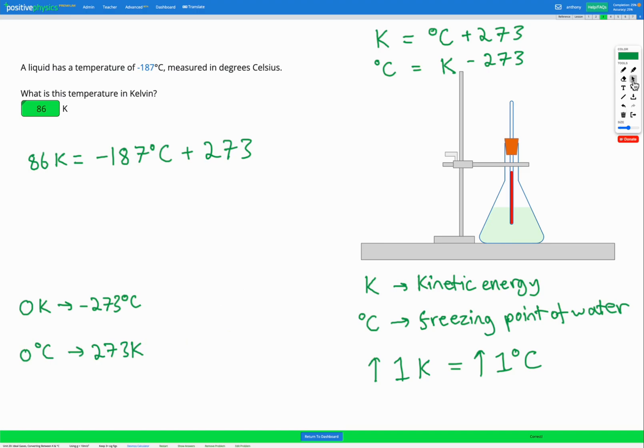So we can see that the lowest possible temperature, the temperature where particles don't have any kinetic energy, they're not moving, would be zero degrees Kelvin, which is the same as negative 273 degrees C, whereas the freezing point of water, which is zero degrees C, that's also at 273 Kelvin.